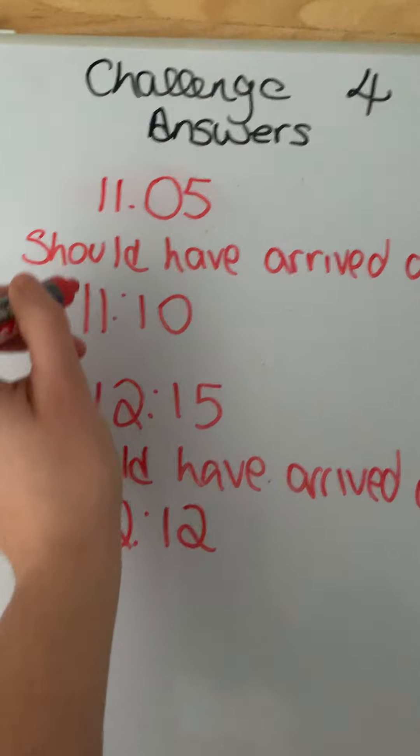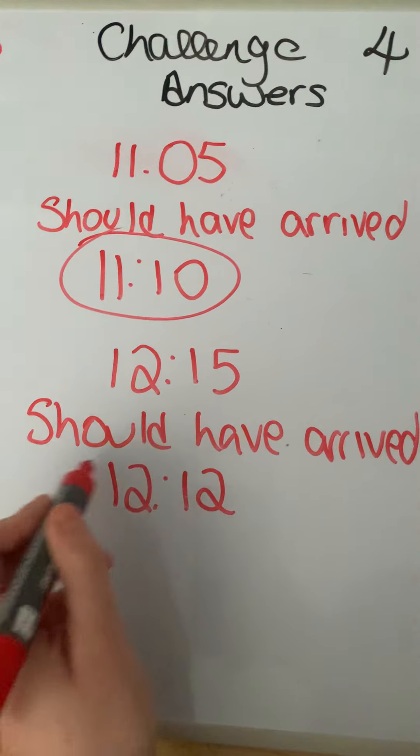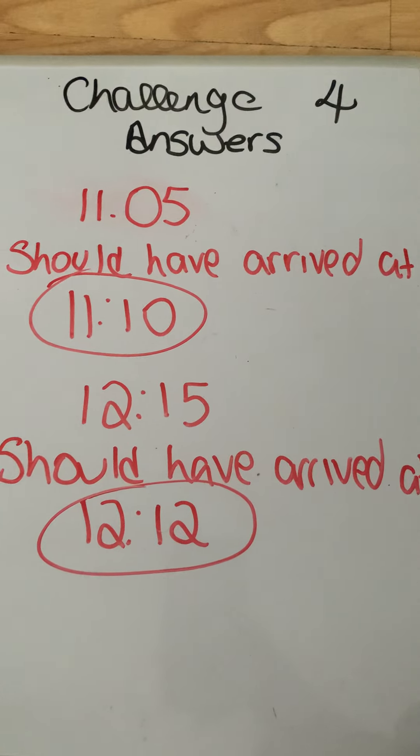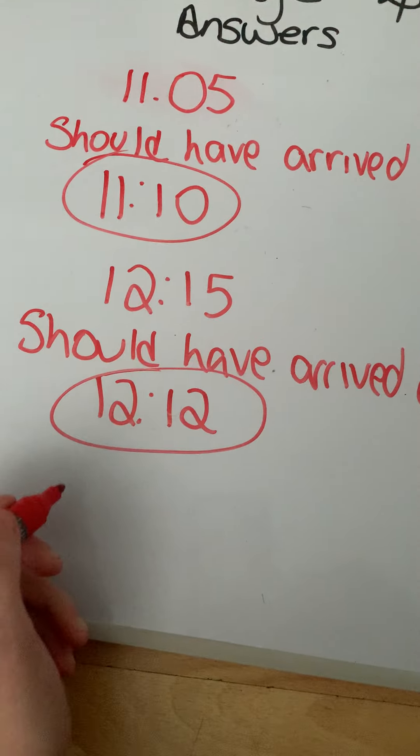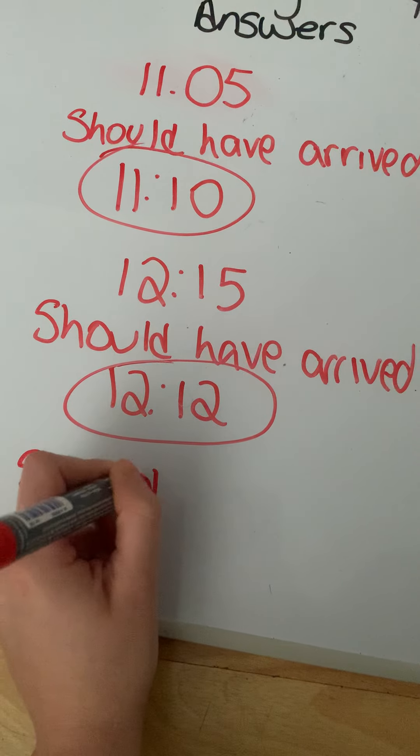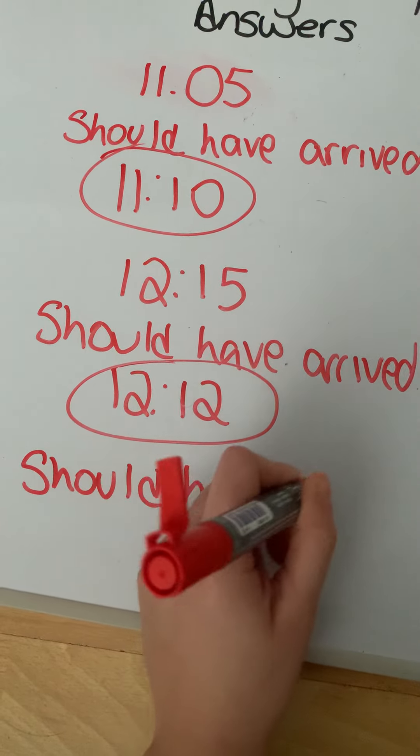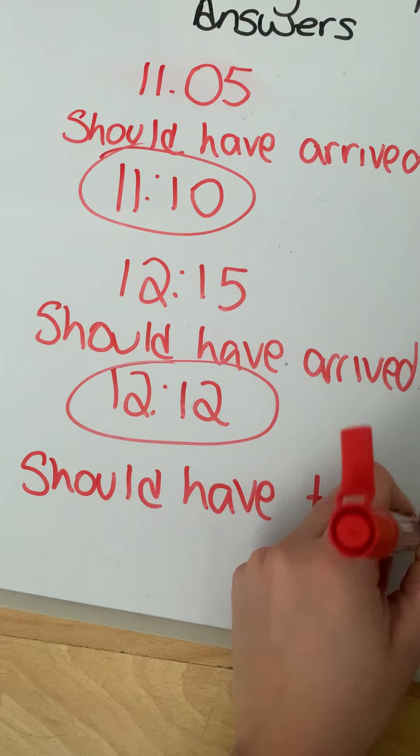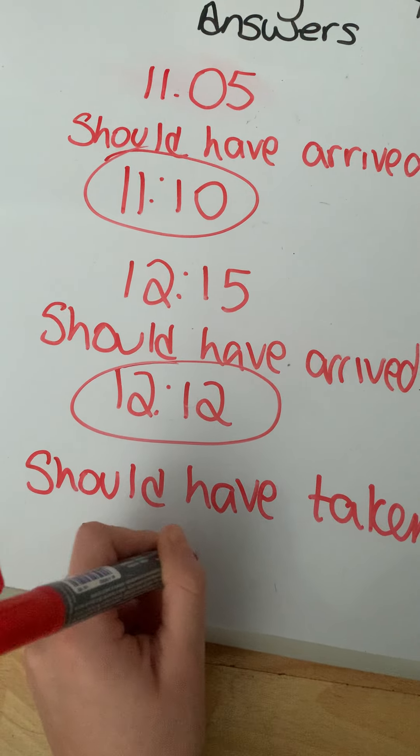So now we know that's the time she should have got on the bus and that's the time she should have got off the bus. So how long should it have taken? Well, we know it's going to take an extra hour and an extra two minutes. So it should have taken one hour and two minutes.